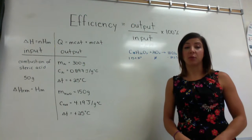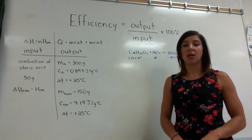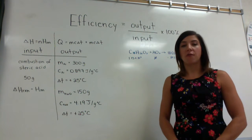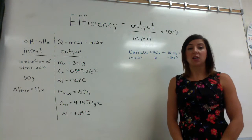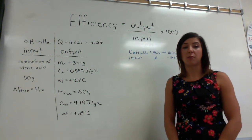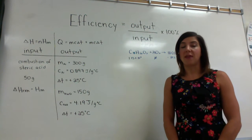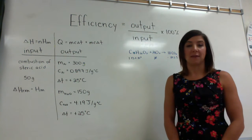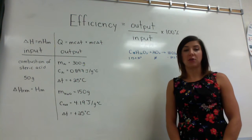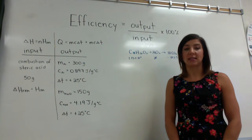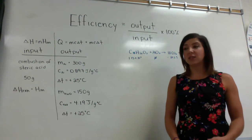An aluminum pot with a mass of 300 grams was used to heat up 150 milliliters of water from 25 degrees Celsius to 50 degrees Celsius, to measure the efficiency of a simple combustion calorimeter heated by a stearic acid candle. The enthalpy of that is given. What is the efficiency of the calorimeter if 50 grams of the stearic acid candle is burned to heat the water and the pot?